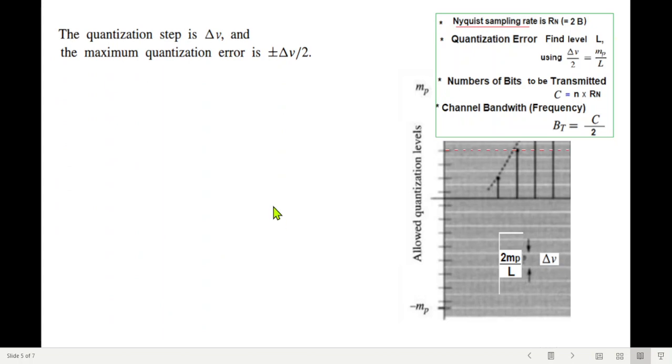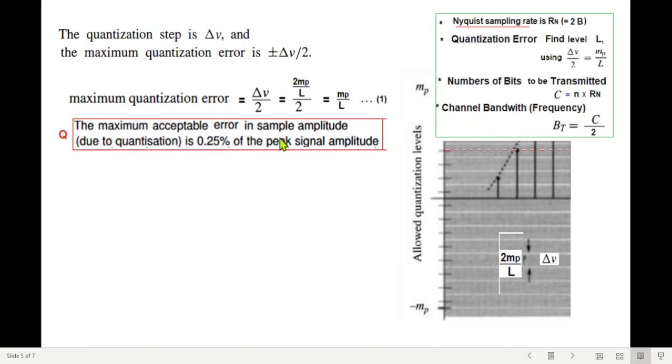Now we will calculate the error quantization step. The signal amplitude between MP and minus MP is divided by the total number of levels. We are assuming the total number of levels is L. So 2 MP divided by L will give the width of one level, we call this as delta V. And we discussed in the previous video that the maximum error will be half of this, half of delta V. So the maximum quantization error is delta V over 2, and delta V is 2 MP over L, so solving we get MP over L.